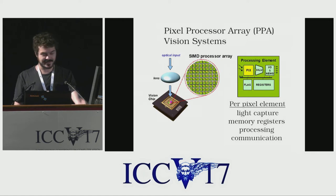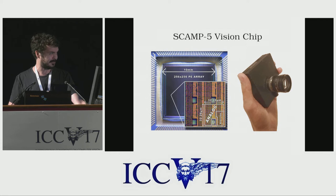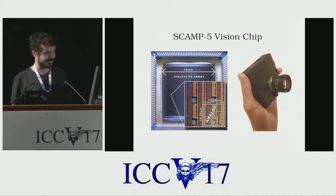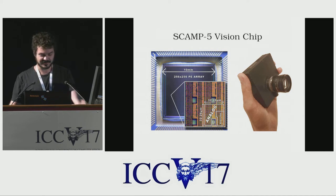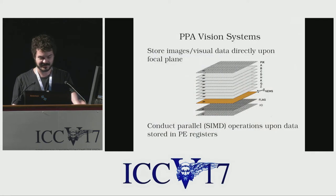For those unfamiliar, pixel processor arrays are visual sensors where every pixel element contains both a processor, memory registers, and also communication between the pixels themselves. This work makes use of the SCAMP5 sensor being developed at the University of Manchester, featuring a 256 by 256 array of 65,000 processors, each at 10 megahertz, all upon the same piece of silicon.